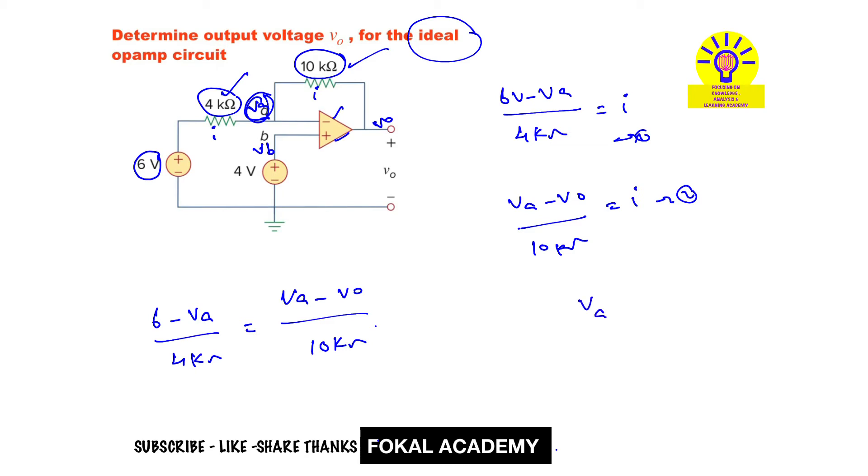va equals vb, which equals the minimum value of voltage. Here 4 volts and 6 volts are present, so the minimum is 4. Therefore va equals 4 volts.